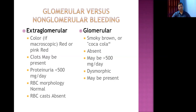In glomerular bleeding, proteinuria is usually greater than in extra-glomerular bleeding. A very important differentiating feature is RBC morphology: after passing through the glomerular membrane, RBCs become dysmorphic, whereas in extra-glomerular bleeding, RBC morphology is normal. RBC casts are present in glomerular disorders but absent in extra-glomerular hemorrhage, as cast formation requires passage through renal tubules.